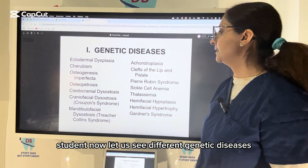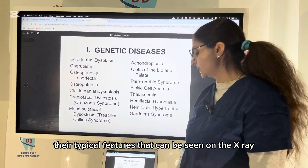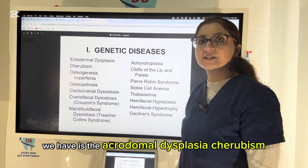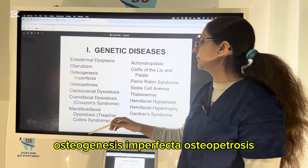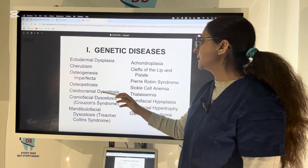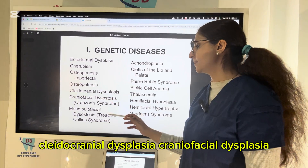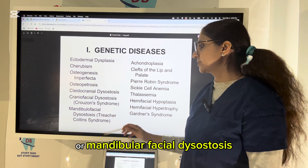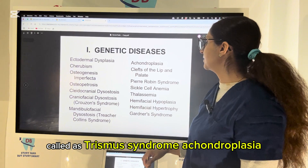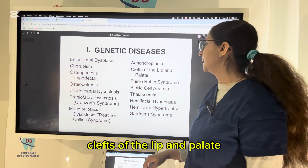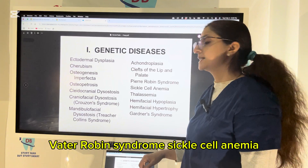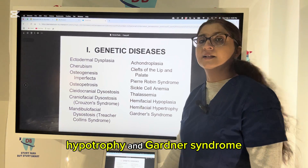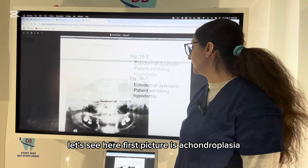Now let us see different genetic diseases. There are typical features that can be seen on the X-ray. The important ones here are ectodermal dysplasia, cherubism, osteogenesis imperfecta, osteopetrosis, cleidocranial dysplasia, craniofacial dysplasia also called Crouzon syndrome, mandibular facial dysostosis called Treacher Collins syndrome, achondroplasia, clefts of the lip and palate, Pierre Robin syndrome, sickle cell anemia, thalassemia, hemifacial hypoplasia and hypertrophy, and Gardner syndrome.